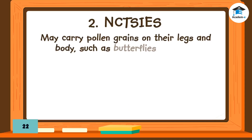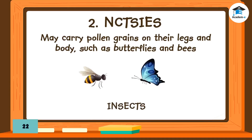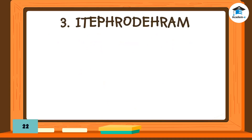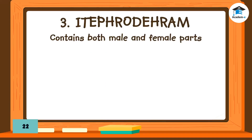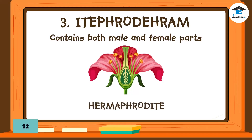Number 2: May carry pollen grains on their legs and body, such as butterflies and bees. Answer: Insects. Number 3: Contains both male and female parts. Answer: Hermaphrodite.